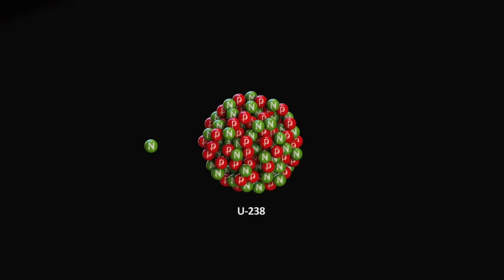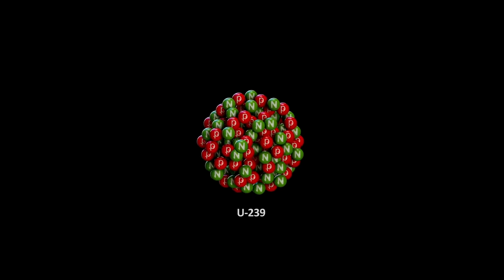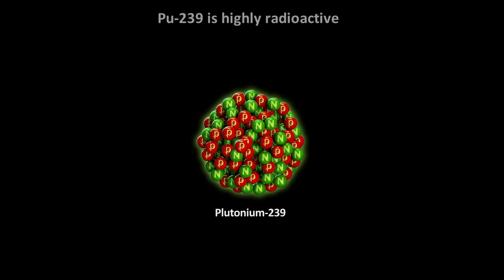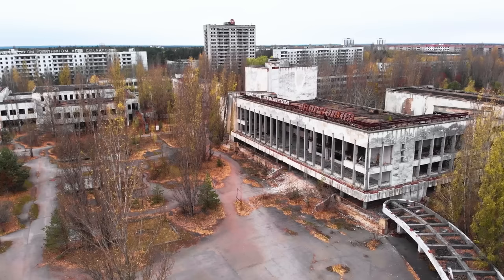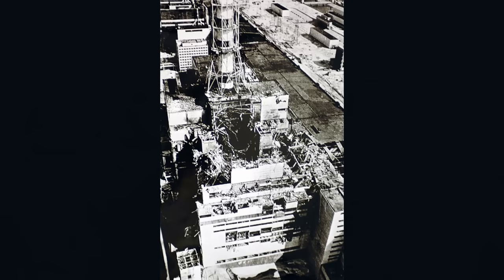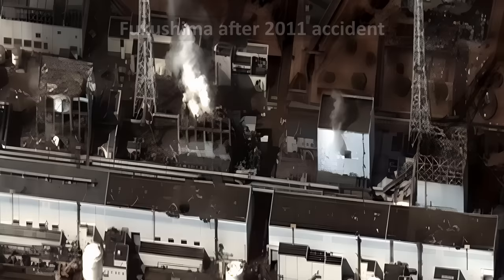But of course, the elephant in the room is that the uranium fission technology used in current nuclear power plants produces highly radioactive and harmful byproducts, which requires storage for long periods of time. And in the case of the very rare accidents, it can cause an environmental disaster. So this technology faces much public resistance because of its perceived safety issues. Real or not, this perception has been shaped over many decades from highly publicized nuclear accidents, the most recent of which are Chernobyl in 1986 and Fukushima in 2011.